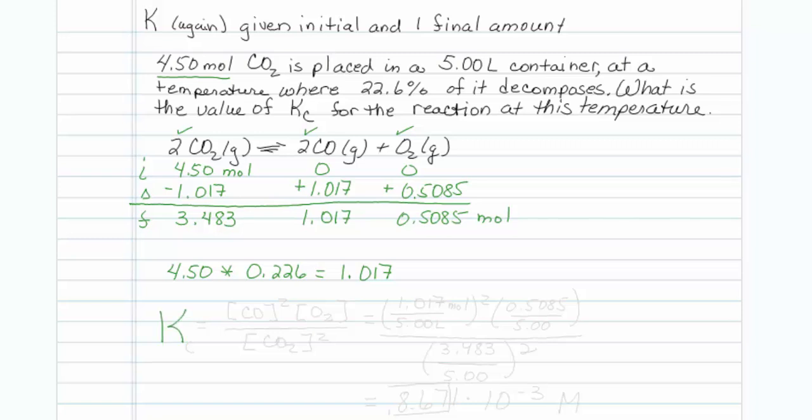Now let me write my equilibrium expression. It looks like I'm being asked to find Kc, so that would be in units of concentration. So that would be my carbon monoxide concentration squared, oxygen concentration to the first power over my CO2 concentration squared.